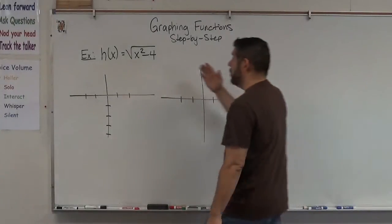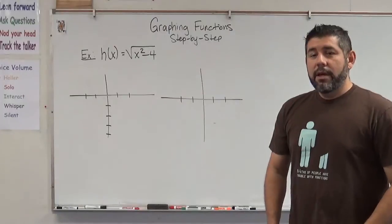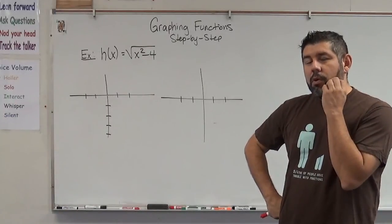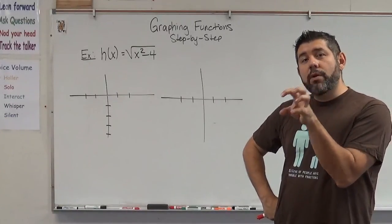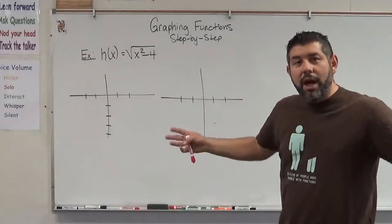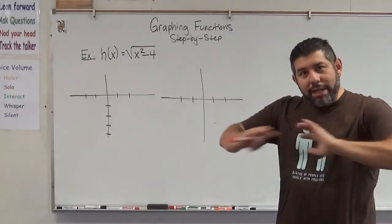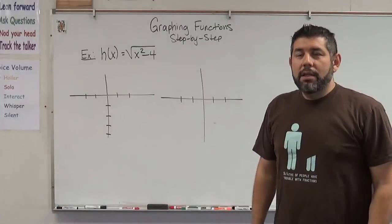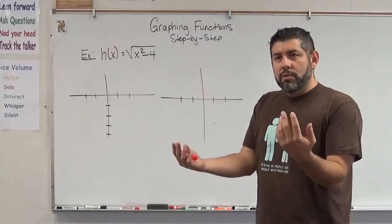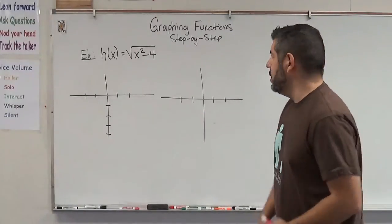Now we're dealing with a square root. A square root does something different than both the square and the absolute value. Remember, a square root can't have any negatives inside it. So when we apply a square root to a function graphically, we take everything below the x-axis — all the y-values that were negative — and we just erase them. They're gone. The other thing a square root does is make things increase slower. For example, the square root of 4 is 2, and the square root of 16 is 4, so it increases at a slower rate.